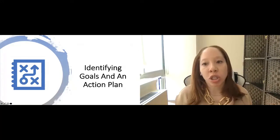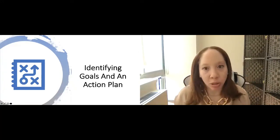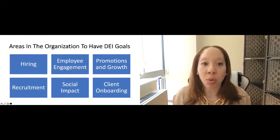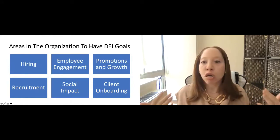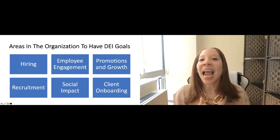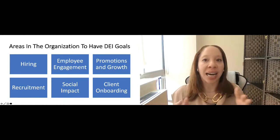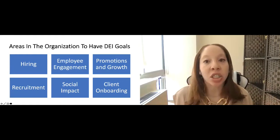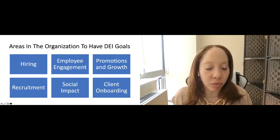So now that we understand that it really all starts with bias, we need to now start to create and identify goals and an action plan. So areas in an organization that you would have D&I goals, you can have them in hiring, employee engagement, promotions and growth, recruitment, social impact, client onboarding. And this is just the tip of the iceberg. You can have goals regarding D&I in various elements of your business. But for the focus of today, this is just some of the key ones where we could start to make that right step forward.